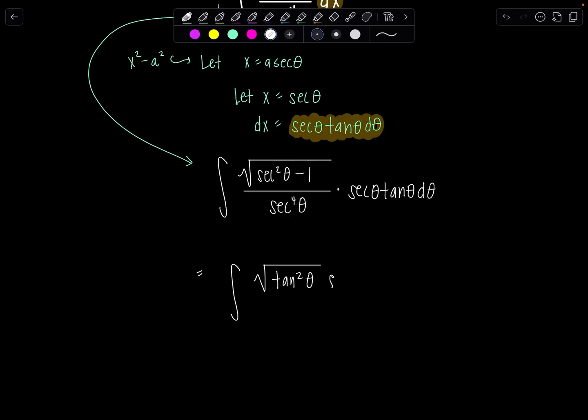and then I still have secant theta tan theta d theta over here over secant to the fourth theta.